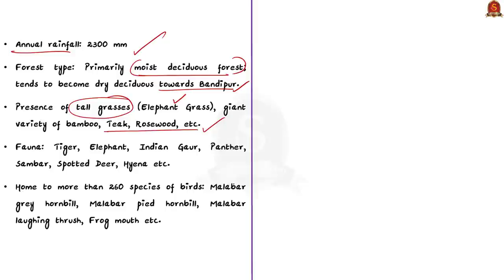When we are talking about animals, Tiger, Elephant, Indian Gaur, Panther, Sambar, Spotted Deer and Gayana are found in Mudumalai Tiger Reserve. Apart from this, Mudumalai Tiger Reserve has a wide variety of bird species. It has around 260 species of birds. This includes rare birds like Malabar Grey Hornbill, Malabar Hornbill, Malabar Laughing Thrush, Frogmouth etc. So it has a wide range of flora and fauna.